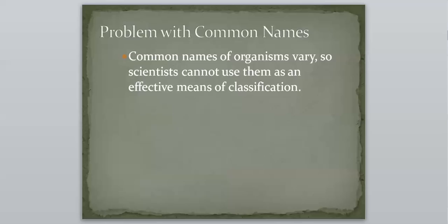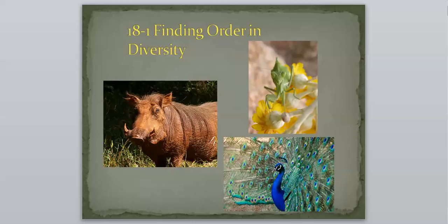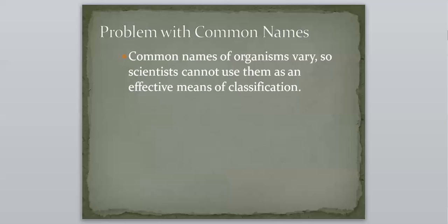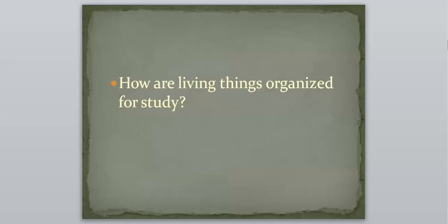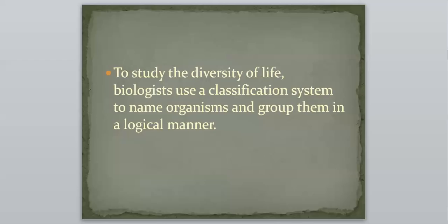Common names of organisms vary based off what regions you live in, and scientists cannot use them as an effective means of classification. We have different languages all over the world, and even within different regions of our country, people call the same animal different things. So we're not going to use common names to classify organisms. So how are living things classified or organized to study? Biologists use a classification system to name organisms and group them in a logical manner.